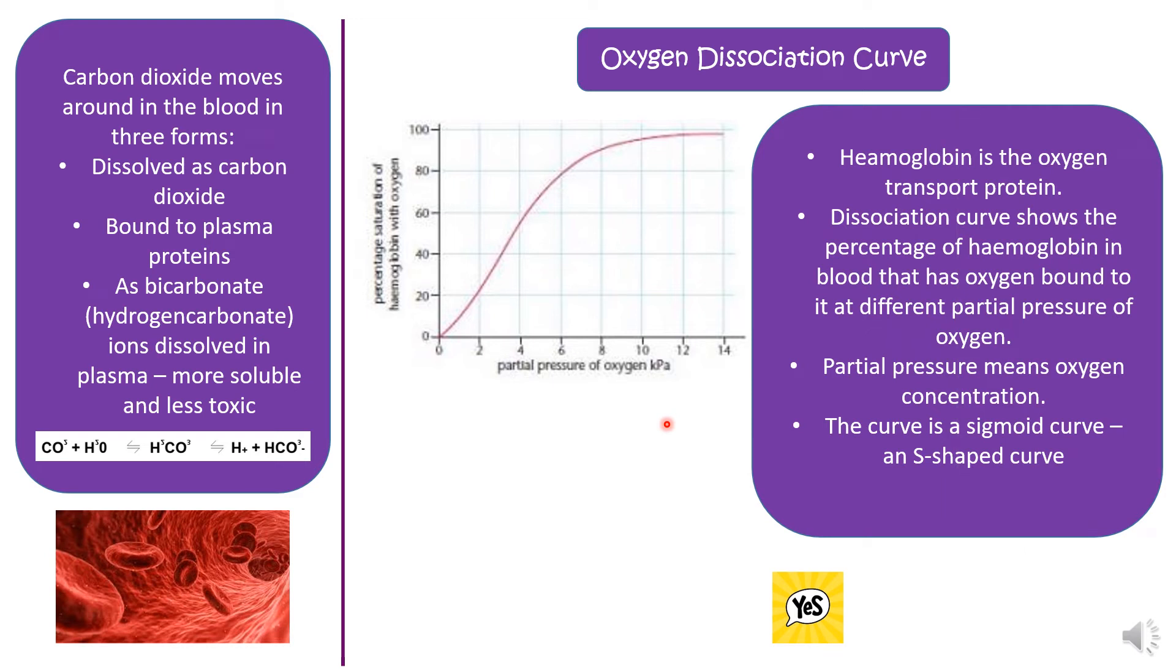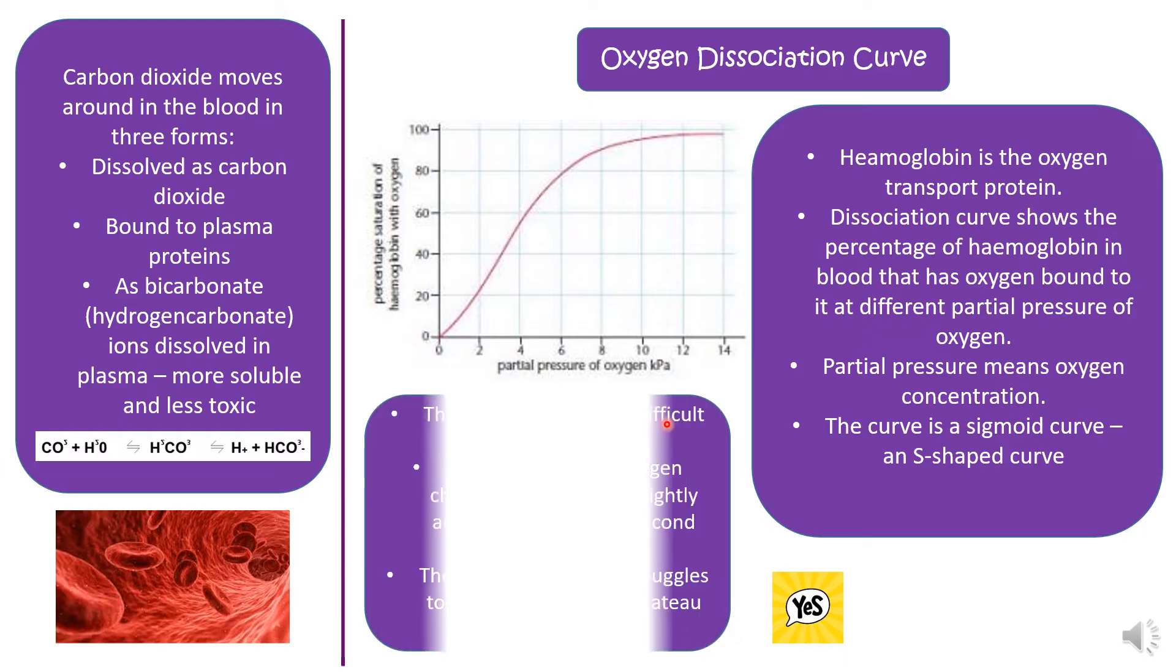Hemoglobin is the oxygen transport protein. We find hemoglobin in red blood cells. Hemoglobin is a quaternary protein, which means it's a number of tertiary structures joined together to produce one protein. The dissociation curve shows the percentage of the hemoglobin in the blood that has oxygen bound to it at different partial pressures. The partial pressure means concentration of oxygen. We call the curve sigmoid because it's an S shape.